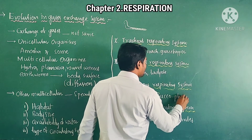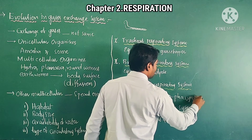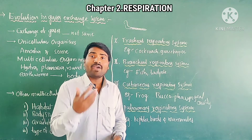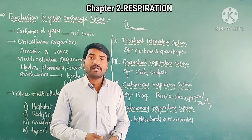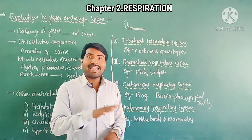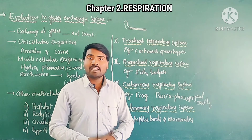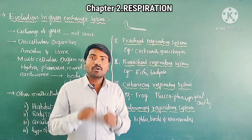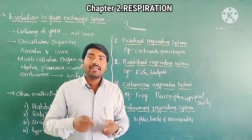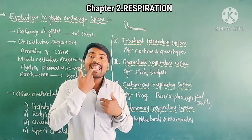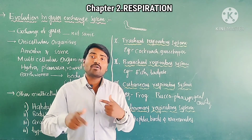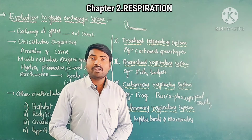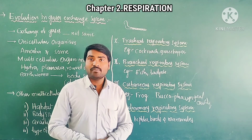The frog also respires through the bucco-pharyngeal cavity. During this type of respiration, whenever the frog comes onto land, the buccal cavity is completely closed and only the internal nostrils are opened. Air passes through the lining of the buccal cavity where gas exchange takes place, because inside the membrane it is rich with blood capillaries. This is called bucco-pharyngeal respiration.